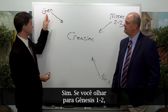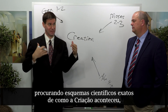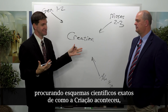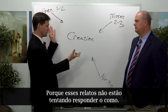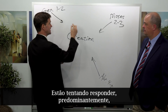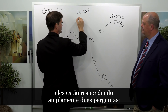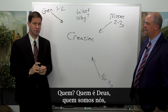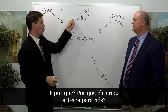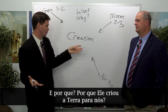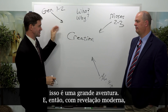If you're looking to Genesis 1 and 2, Moses 2 and 3, or Abraham 4 to 5 for exact scientific blueprints for how the creation took place, you're going to spend a lot of time spinning wheels and going nowhere. These accounts aren't trying to answer the how. They're answering two questions: Who — who is God, who are we, how does that relationship fit? And why — why did he create the earth for us? If you're just looking for those two things, this is a great adventure.